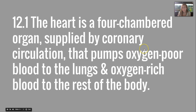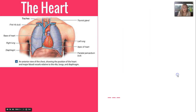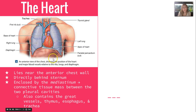The heart is a four-chambered organ supplied by coronary circulation. It pumps oxygen-poor blood to the lungs and oxygen-rich blood to the rest of the body. The heart lies near the interior chest walls directly behind the sternum, enclosed by the mediastinum — a connective tissue mass between the two pleural cavities that also contains the great vessels, thymus, esophagus, and trachea.